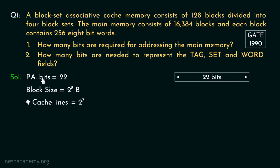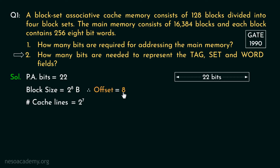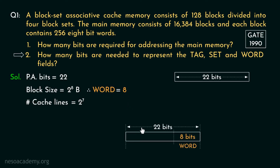So far we know: physical address requires 22 bits, block size is 2 to the power 8 bytes, and the number of cache lines is 2 to the power 7, which is 128. Coming to question number 2, they are asking how many bits are needed to represent the tag, set, and word fields — basically the physical address bit split. Since the block size is 2 to the power 8 bytes, for the offset we need 8 bits. In this question the offset field is renamed as 'word', so for the word field we need 8 bits — the 8 least significant bits of the 22-bit physical address.